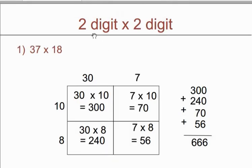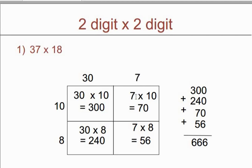Now we will do multiplication of 2-digit by 2-digit number with the box method. The example is 37 multiply by 18. So for 37 we write 30 plus 7, and for 18 we write 10 plus 8. Here we need 2 boxes wide and 2 boxes high. For this particular box, take 30 from here and 10 from here, and make a multiplication of 30 with 10 — you will get 300. Same way take 7 and 10 and you will get answer 70.